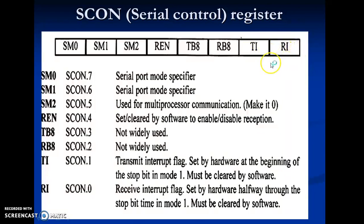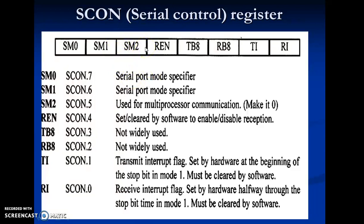The bits include the receive interrupt flag (RI) and transmit interrupt flag (TI). Two bits are undefined and not widely used. There is a reception enable bit (REN). The three mode bits SM0, SM1, and SM2 define the modes of operation. SM2 is used for multiprocessor communication — when using multiprocessor communication, SM2 must be enabled. The SCON register is an 8-bit register used to program the start bit, stop bit, and data bits of data framing, among other things.